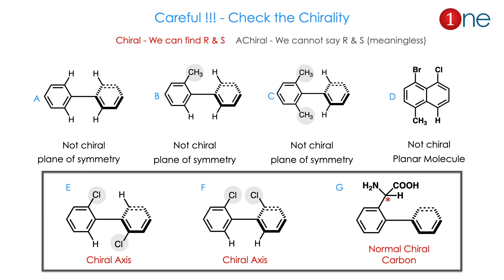I have to warn you: you have to check the chirality before you get into R and S. If it is chiral only, you can say R and S. If it is achiral, there is no meaning to it. If you look at compound A, it is not chiral because all hydrogens are there — it has two perpendicular planes of symmetry. The same applies to compounds with CH3 where the plane goes through the CH3. If you look at compound D, it is a planar compound, so definitely it is not chiral. Compound E is chiral because it has two different attachments in the same benzene ring. Compound F might seem to have a plane of symmetry, but no — because of the perpendicular nature it doesn't have one, so it is also chiral. Compound G is chiral because of a normal chiral carbon. So, before proceeding, you should know whether the compound is chiral or not.